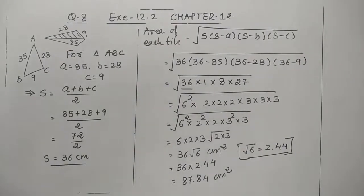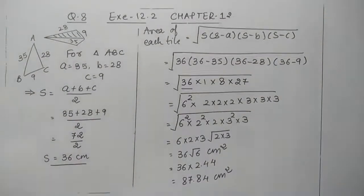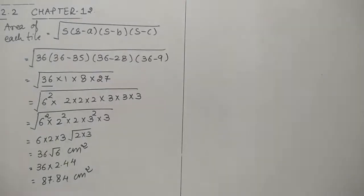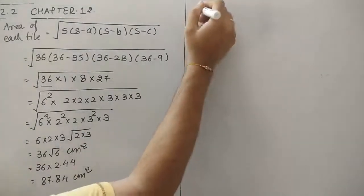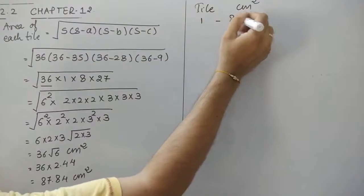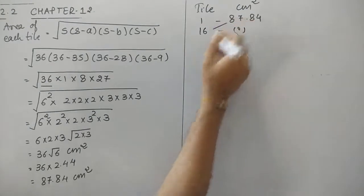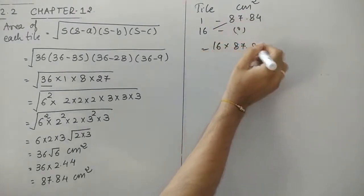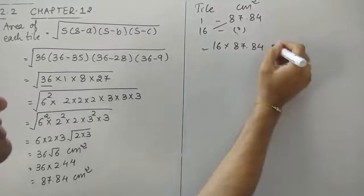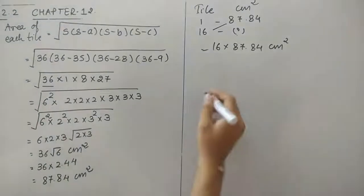There are 16 such tiles in total. So let's find the total area of all 16 tiles. Total area = 16 × 87.84 centimeters square. This is not the final answer yet — we still need to find the cost.